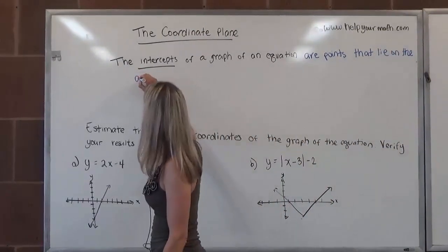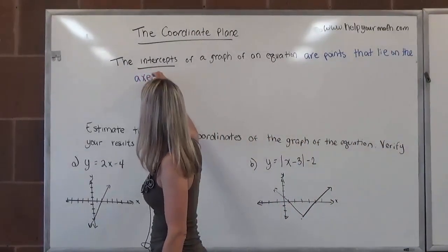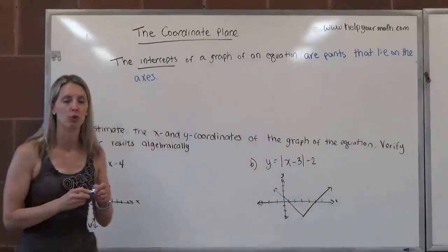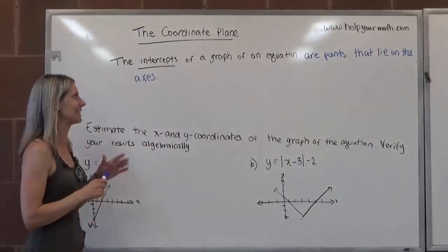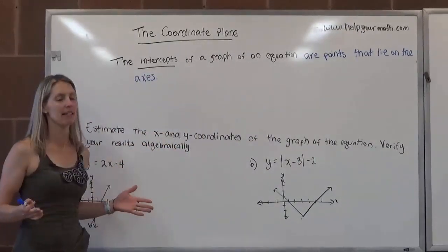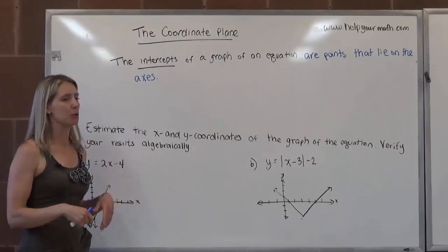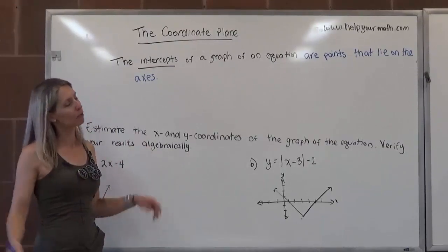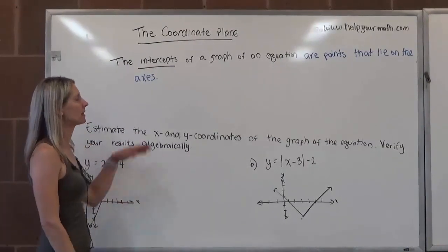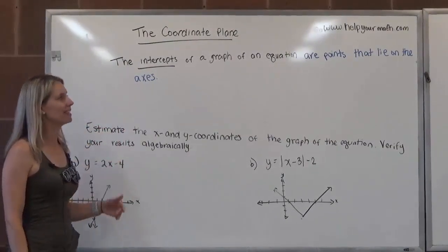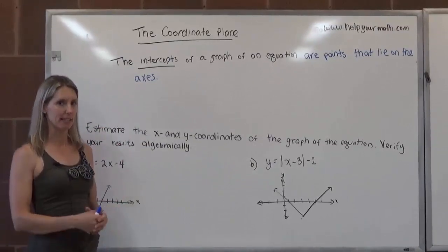The plural of axis is axes — I don't know what language that got derived from where you switch the i to an e and that makes it plural, but that's the case. So the intercepts are the points that lie on the axes.